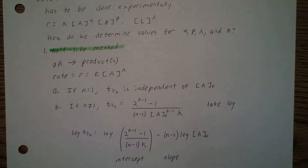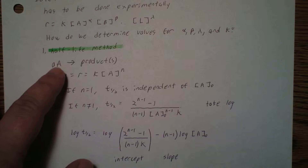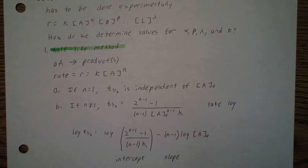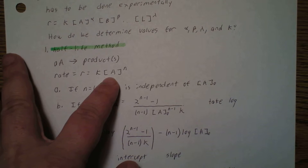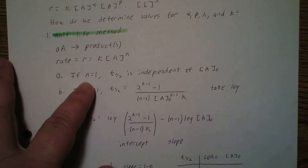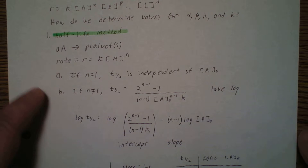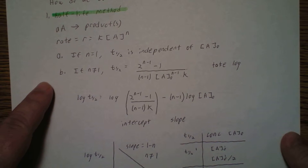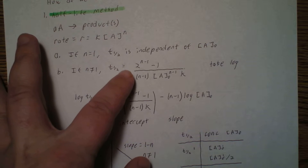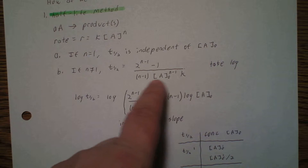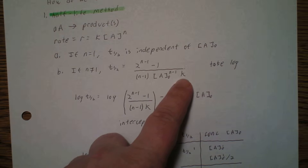One method is what we call the half-life method. Let's say we have a substance A going to one or more products. Then the rate R is equal to K times the concentration of A to the N. If N is equal to 1, then the half-life is independent of the initial concentration of A. If N is not equal to 1, then the half-life is equal to 2 to the (N minus 1) minus 1, times (N minus 1), times the initial concentration of A to the (N minus 1) power, times K.